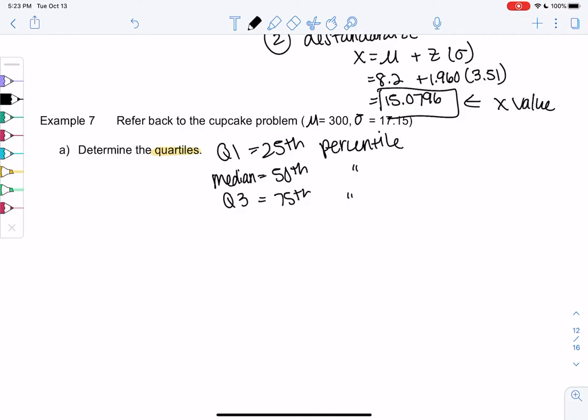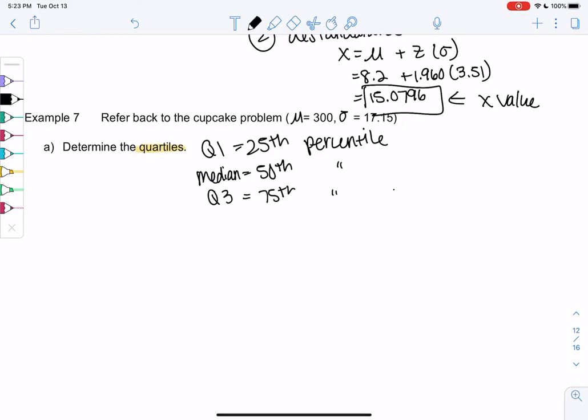These are working backwards because we know the percent. I'm going to do the median first because the median is actually really easy with normal curves. So 50-50 would be right at the mean of 300. The mean and the median are both 300 for normal curves, and that has to do with 50-50. Cuts it in half perfectly.